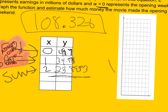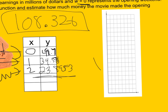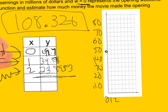To graph this function, I set up axes with W values 0, 1, 2 and earnings in increments of 10 million. At W = 0, I'm at about 49.9. At W = 1, about 34.58. At W = 2, about 23.90. You can see the curve decreasing — ticket sales drop off each successive weekend in a classic exponential decay pattern.